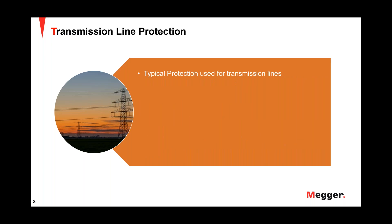Next we'll look at typical protections used for transmission lines. The first is overcurrent protection — considered the least expensive kind of protection to implement. It is mostly used for low-voltage and medium-voltage radial feeders, meaning one-way power flow. They are non-selective and require coordination between other overcurrent devices in the circuit. However, overcurrent protection is hard to apply in mesh networks because the direction of current can be in any direction.